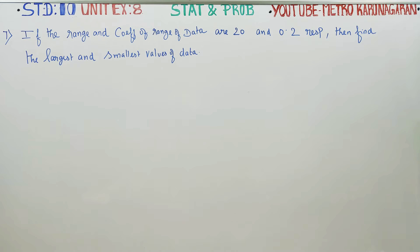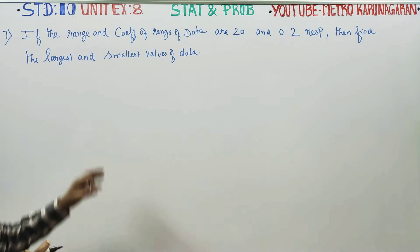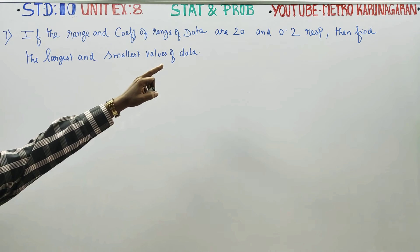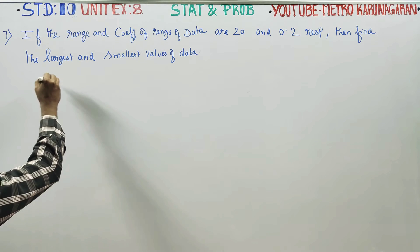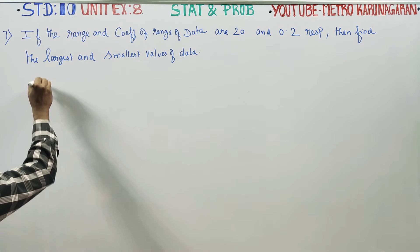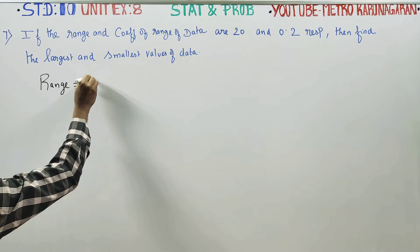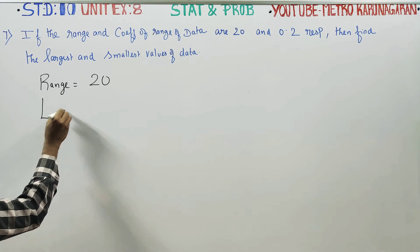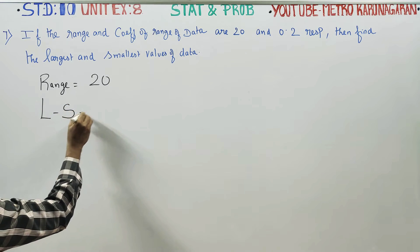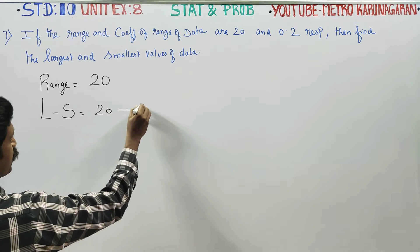Dear 10th standard students, in the statistics and probability unit, problem number 8, sum number 7. If range and coefficient of range are 20 and 0.2 respectively. First information: range is equal to 20. The formula is L minus S, that is largest value minus smallest value, is equal to 20. This is equation number 1.